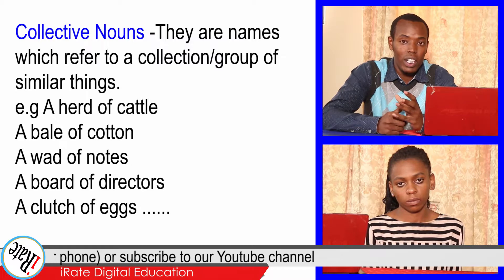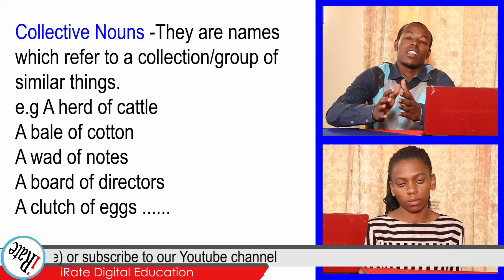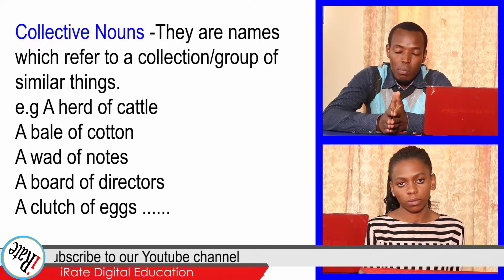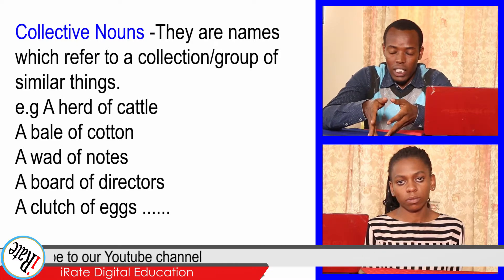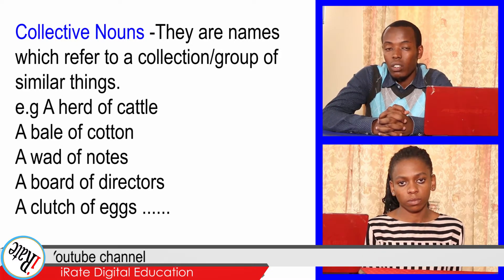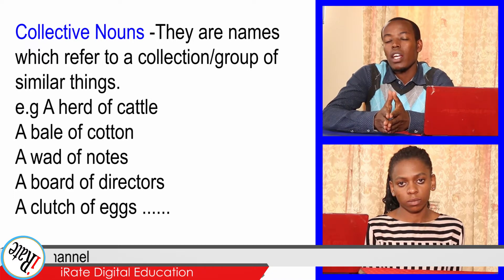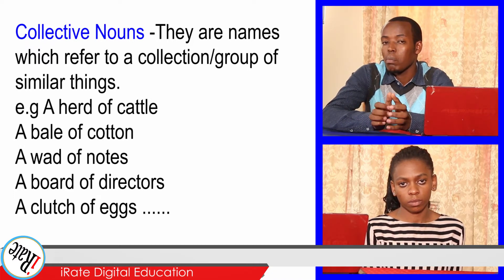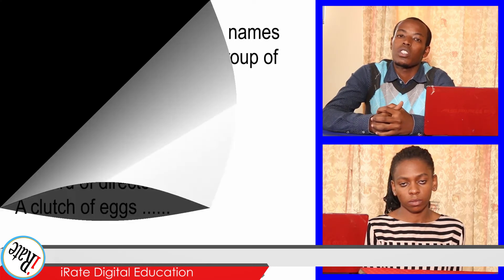Thirdly, we have collective nouns. These are nouns that represent a group of things or items. An example is a basket of fruits, which means apples, bananas, mangoes, and pineapples. We move to the next question.